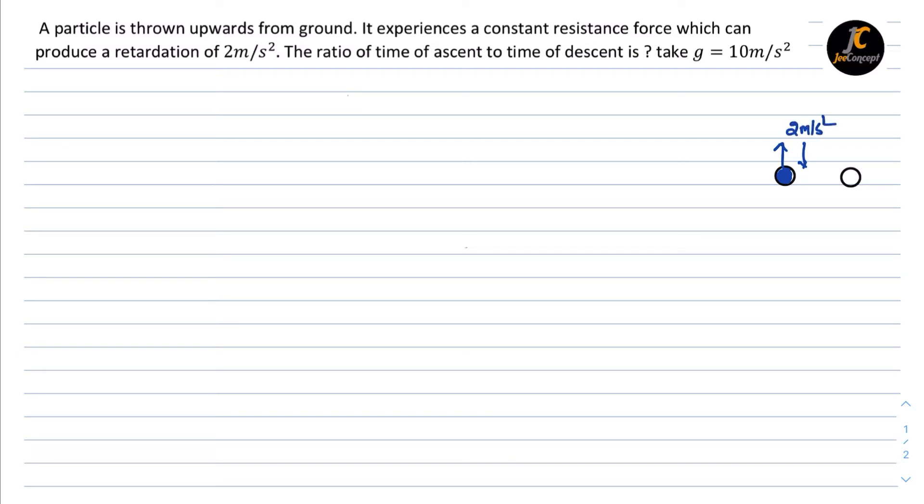If this object is moving upward, the acceleration due to gravity acts in the downward direction. In the second case when this object moves downward, the resistance force will act against the motion. So this time the resistance force will produce a retardation in upward direction which is 2 m/s² again, and g will act in the downward direction. This is the upward scenario and this is the downward scenario.